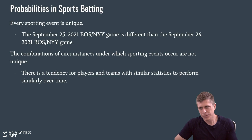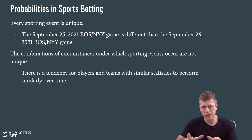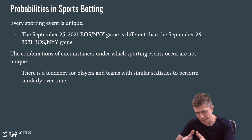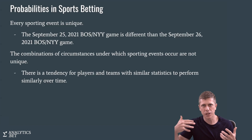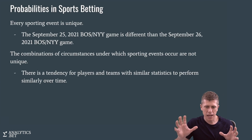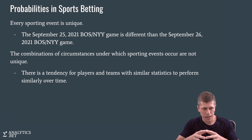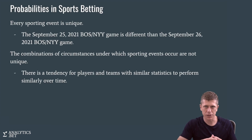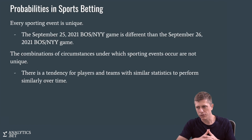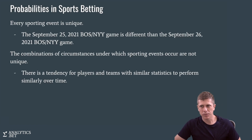That's how probability comes up in sports betting — we have to think of it not so much in terms of the exact game we're talking about tonight, but more in terms of the information we have at our disposal. Of all the times that I have this information at my disposal, how often do I think this particular event is going to happen? How often do I think the home team is going to win versus the away team? That's what we mean when we talk about probability in this course.